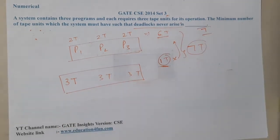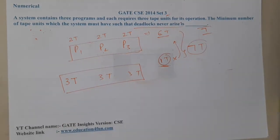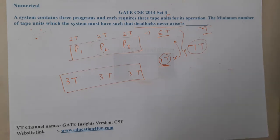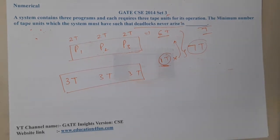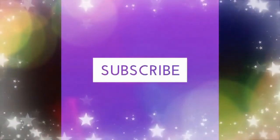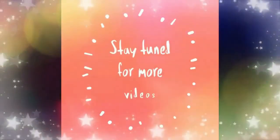So seven is the correct answer. I hope everyone got a clear idea with respect to this question — it's an easy one. Let us continue with the next question in the next lecture. Thank you, and thanks for watching — like, share, and subscribe for more awesome videos.